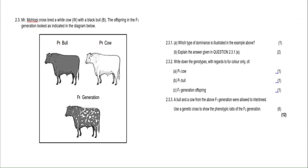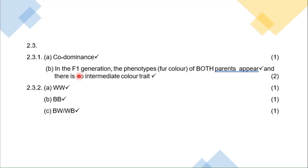Well done to those who got co-dominance. The idea is just to help you understand how to approach the question. Part B says explain the answer — why is it co-dominance? It is when both of the characteristics of the parents are expressed. The key word is 'both' — you are seeing both black and white. Both appear in the F1, so you could say both parental traits appear in the offspring.